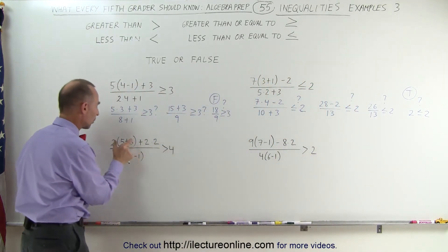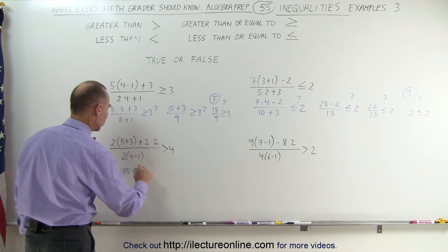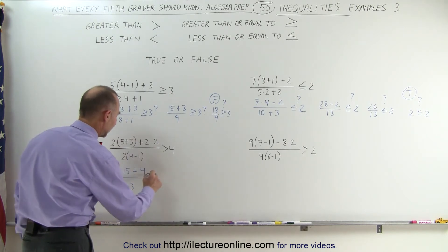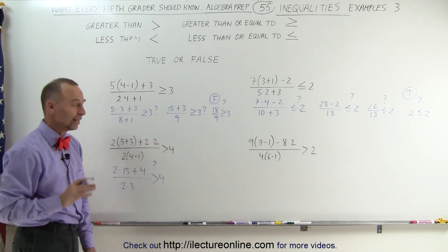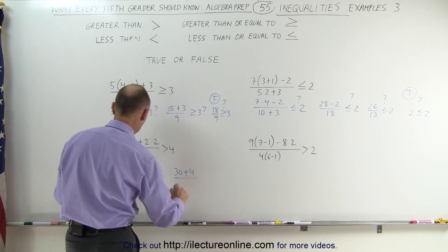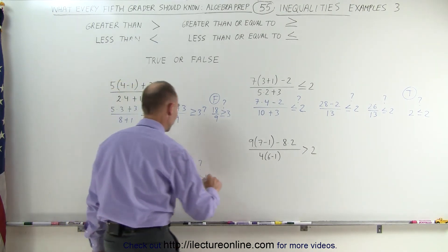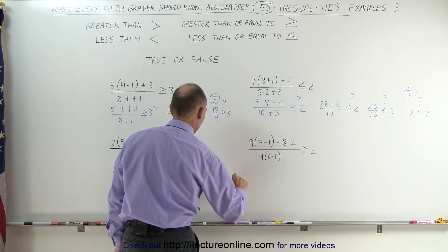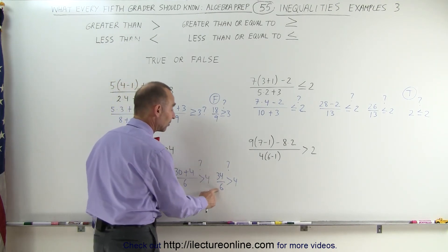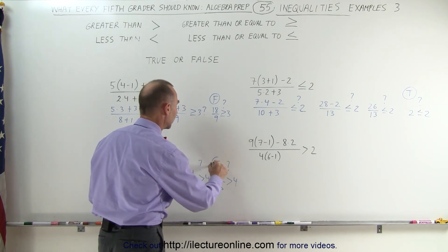In the next example, we again work out what's in the parentheses first. This becomes 2 times (5 plus 3), which is 15, plus 2 times 2, which is 4, divided by 2 times (4 minus 1), which is 3 — wait, that should be a 2 right there. Is that greater than 4? Continuing: 2 times 15 is 30, plus 4, divided by 2 times 3, which is 6. Is that greater than 4? 30 plus 4 is 34, divided by 6, greater than 4? I know that 34 divided by 6 must be greater than 4 because 30 divided by 6 is 5, and 34 divided by 6 must be greater than 5. Therefore, this is a true statement.